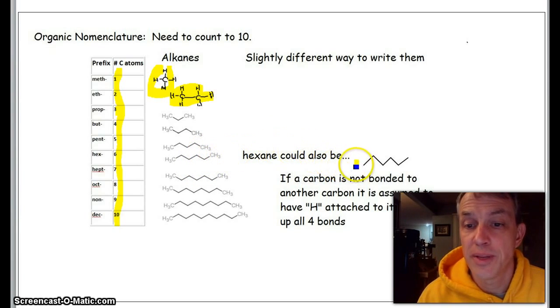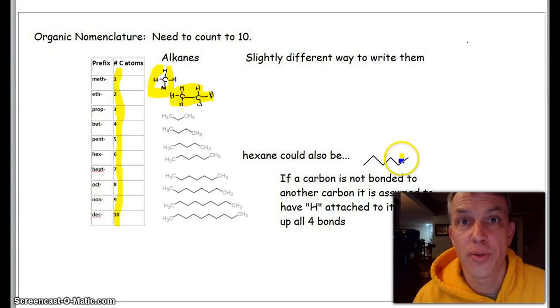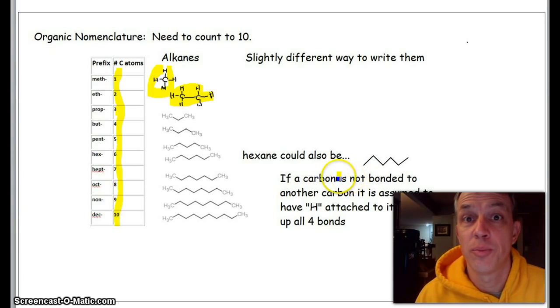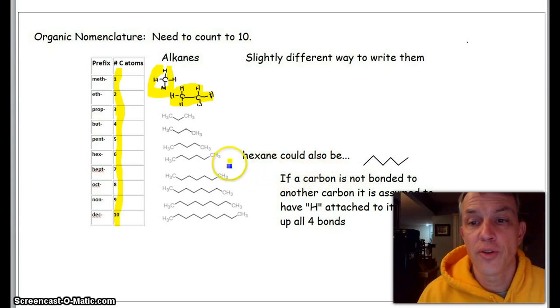This is slightly different. Sometimes they don't put the CH3s on the end, so for instance this would be hexane. You can see here's one, two, three, four, five, six carbons in a row. We're assuming that if this carbon is bonded to this one, that's one bond, and then the other three that would make it up would be those H's.